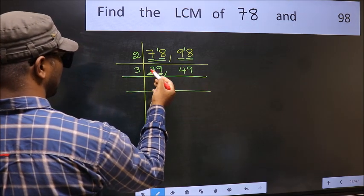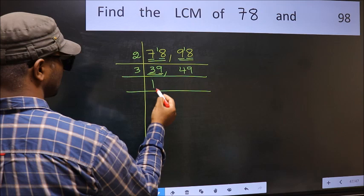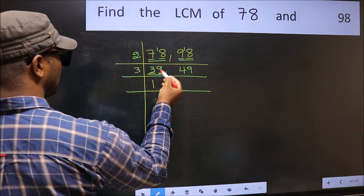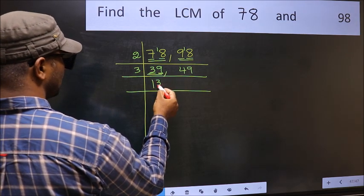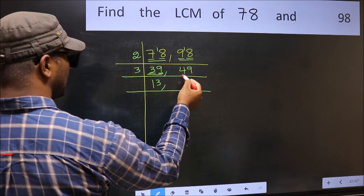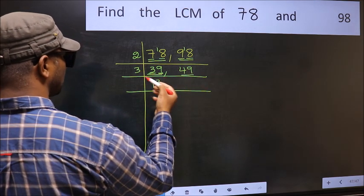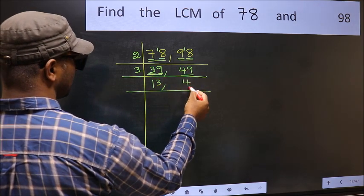First number 3. When do we get 3 in 3 table? 3 ones, 3. The other number 9. When do we get 9 in 3 table? 3 threes, 9. The other number 49, not divisible by 3, so you write it down as it is.